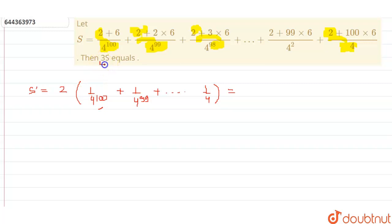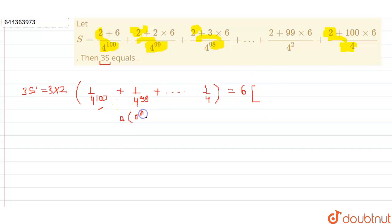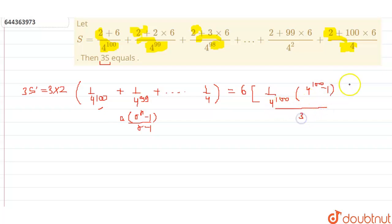We need 3 times S, so we multiply S dash by 3. This gives 3·S dash equals 6 times the GP sum. Using the GP sum formula — a times (r to the power n minus 1) divided by (r minus 1) — this becomes 6 times: 1 upon 4 to the power 100, times (4 to the power 100 minus 1), divided by 3. That is the value of 3·S dash.